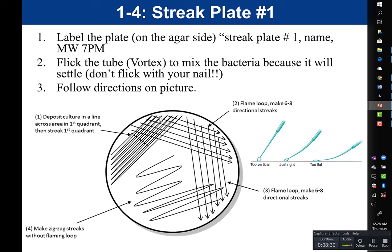Turn on your Bunsen burner and make sure you have your inner blue cone — that's the hottest part of your flame. You're going to take your loop and, holding it like a pencil, flame it starting at the base and working towards the tip. Do not stick your loop directly into the broth while it's still hot — if you take that red-hot loop and stick it directly in the broth, you're going to kill the bacteria. So after you flame your loop, hold it close to the flame and let it cool.